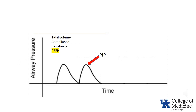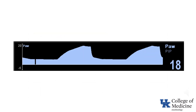Finally, how does PEEP alter peak inspiratory pressure? Positive end-expiratory pressure is another factor that will produce an increase in peak inspiratory pressure. Depending on where the patient is on the lung's pressure-volume curve, the increase may be equal to or less than the amount of PEEP applied. But there will essentially always be some increase in peak inspiratory pressure with the application of PEEP.